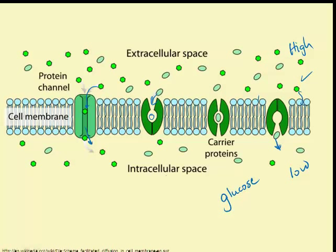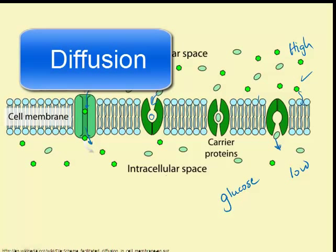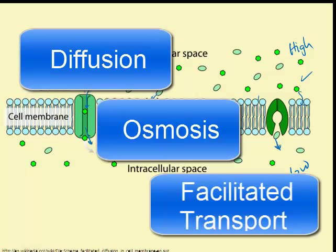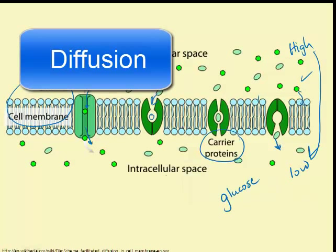In summary, we've looked at three different forms of passive transport: diffusion, osmosis, and facilitated transport. I'll see you next time.